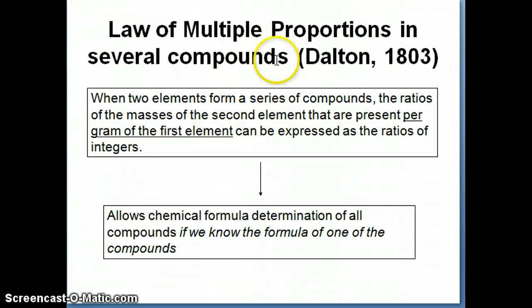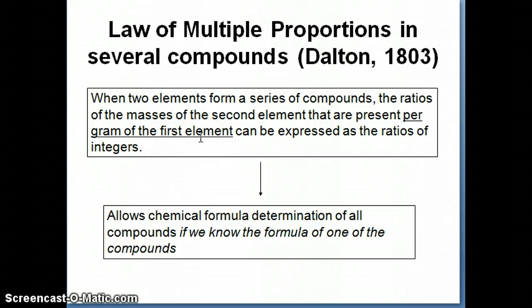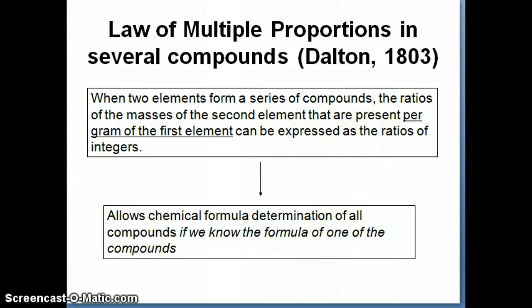What the law of multiple proportion says is that when you have different compounds where the masses of the second element differ per gram of the first element — in this case, different masses of nitrogen per gram of oxygen — the ratio of those masses of the second element can be expressed as a ratio of integers.